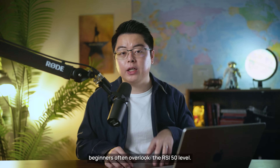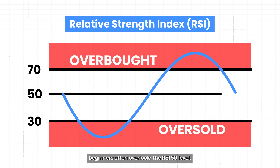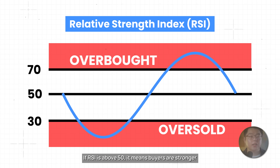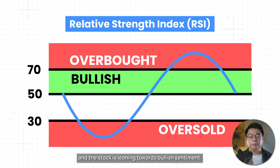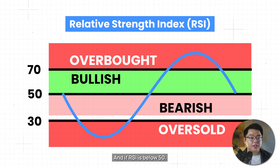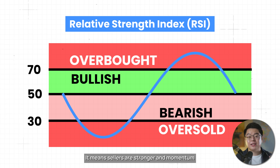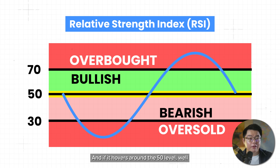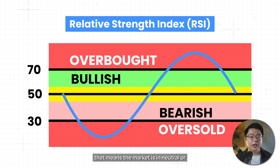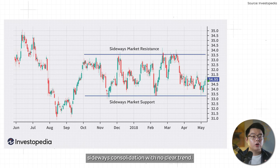Here's one more important level beginners often overlook — the RSI 50 level. If RSI is above 50, it means buyers are stronger and the stock is leaning towards bullish sentiment. If RSI is below 50, it means sellers are stronger and momentum is leaning towards bearish sentiment. And if it hovers around the 50 level, the market is in neutral or sideways consolidation with no clear trend.